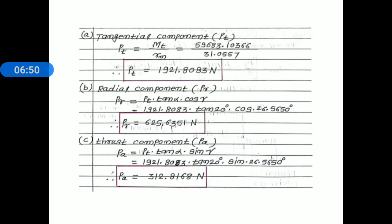The second component is the radial component P sub r. P sub r equals P sub t times tan alpha times cos gamma. Substituting values: 1921.8083 times tan 20 degrees times cos 26.5650 degrees. After simplification, radial component P sub r equals 625.6351 newtons.